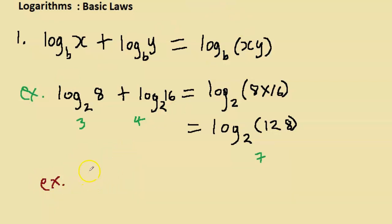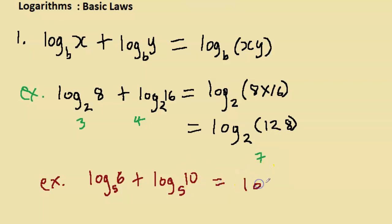Another example: log 6 base 5 plus log 10 base 5. Notice the bases are the same — that's always the assumption. According to the first rule, this equals log of 6 times 10, which is log 60 base 5. You consolidate by taking the product of the two values you're logging.